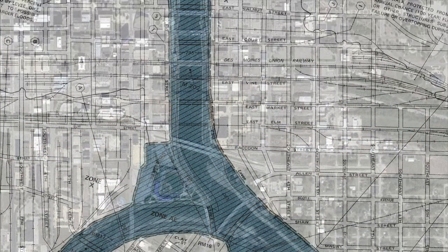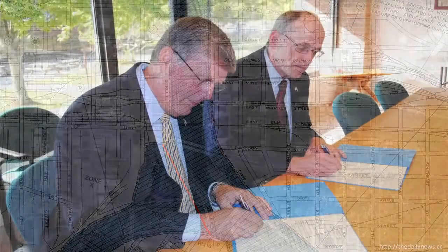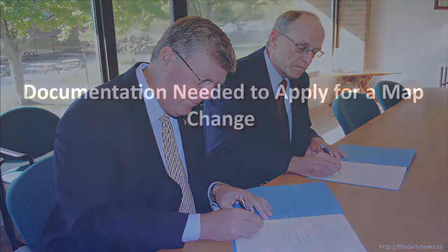Because it has the effect of changing the mapped floodplain, base flood elevation, and floodways shown on a community's effective FIRM, a request for LOMR or CLOMR must be signed by both a community official and the applicant.